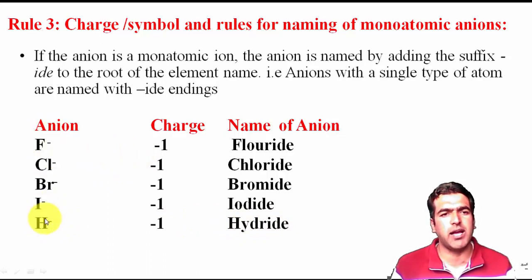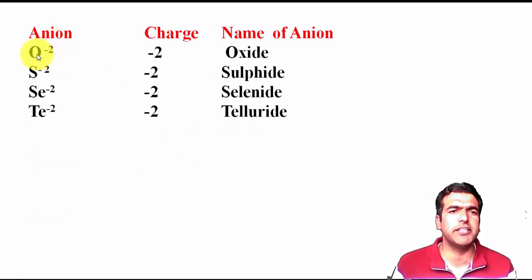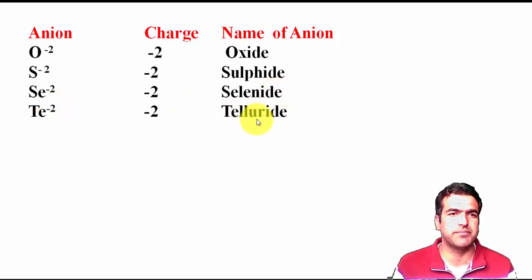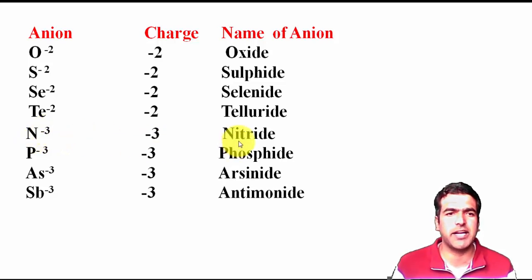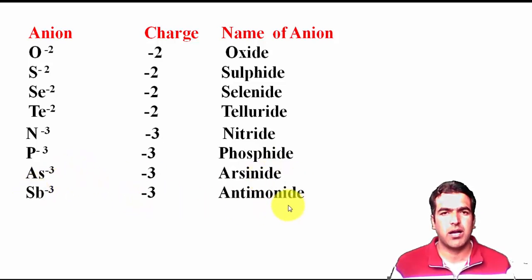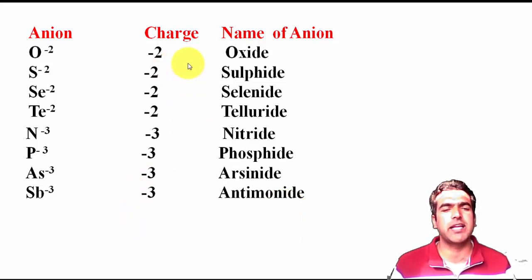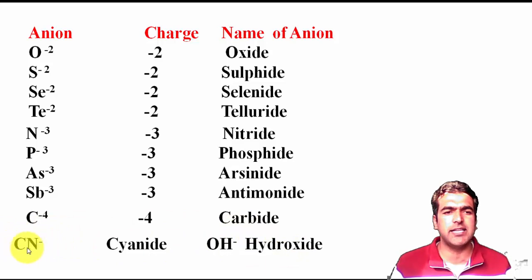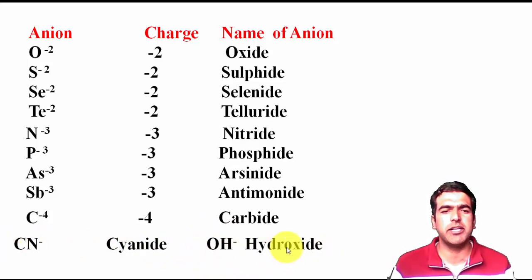Other monatomic anions include sulfur S²⁻ (sulfide), selenium Se²⁻ (selenide), tellurium Te²⁻ (telluride), nitrogen N³⁻ (nitride), phosphorus P³⁻ (phosphide), arsenic (arsenide), antimony Sb³⁻ (antimonide), and carbon C⁴⁻. There are also two exceptions: CN⁻ is cyanide and OH⁻ is hydroxide — these are diatomic anions but are still named with the '-ide' ending.